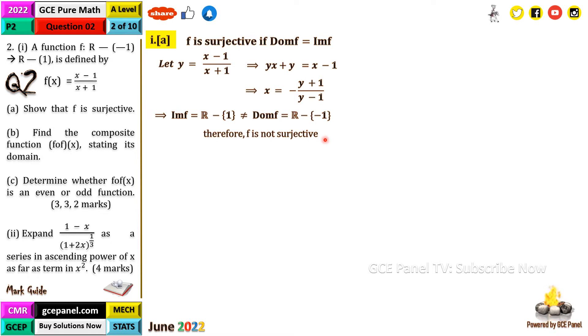Note that because of space constraints we usually don't write much — just give the basics and build it up more. Now part (b): find the composite function f∘f(x) and state its domain.